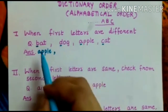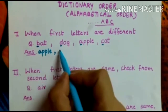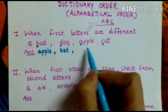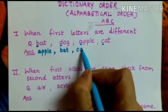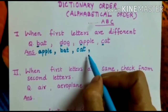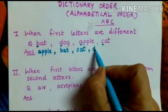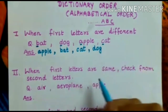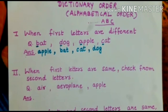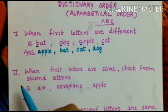After A, what comes? Yes, B — so write down bat. And then cat. And in the last, what will come? Dog. Yes, you're absolutely right. You all know the order of A, B, C — that's why this first case was very easy to do.